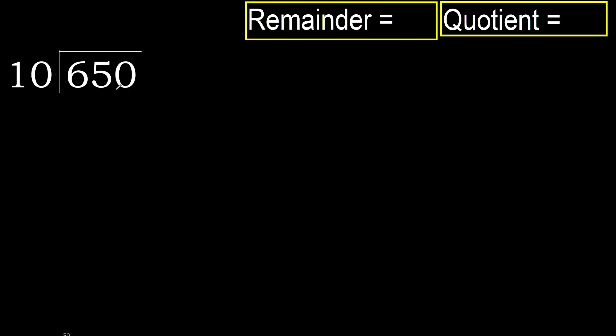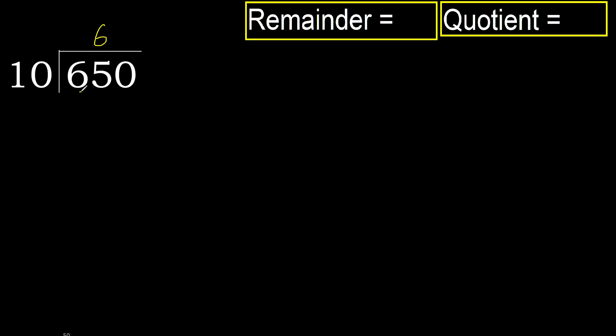650 divided by 10. 6 is less, therefore next. 65 is not less, therefore with 65: 10 multiplied by which number is nearest to 65 but not greater? 10 multiplied by 7 is 70, which is greater. 10 multiplied by 6 is 60, which is not greater.